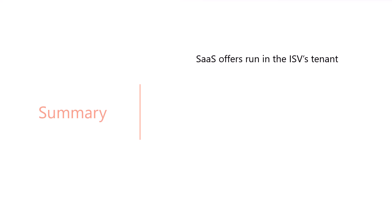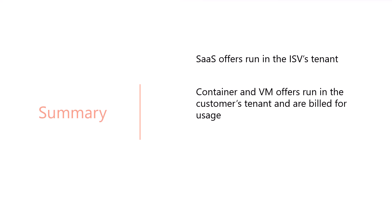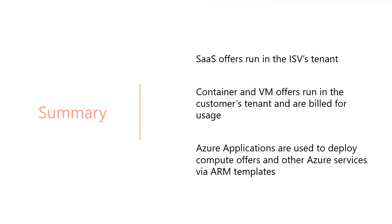Let's recap what we covered with a slightly different perspective. SaaS offers always run in the publisher's tenant and are arguably the most flexible in terms of billing options. Compute offers — containers and VMs — run in the customer's tenant and are billed for usage. Azure applications are used to deploy compute offers in scenarios where the partner will manage the solution on behalf of the customer, or where the customer manages it themselves, and in both cases one can deploy other Azure services alongside the compute offers.